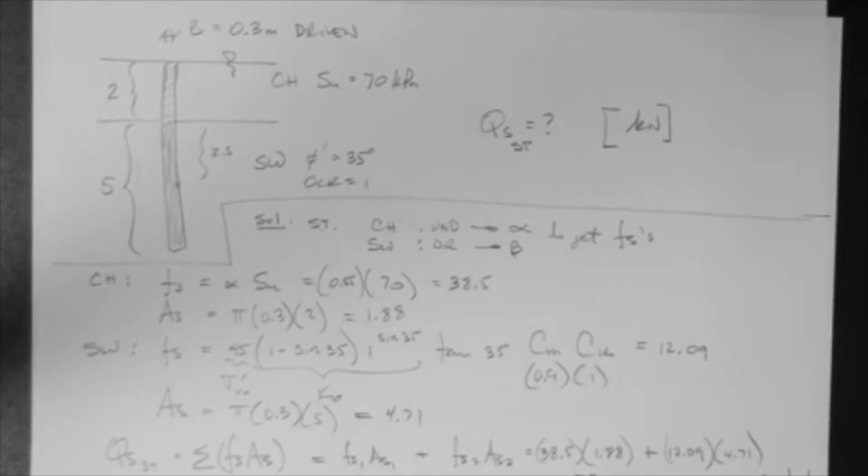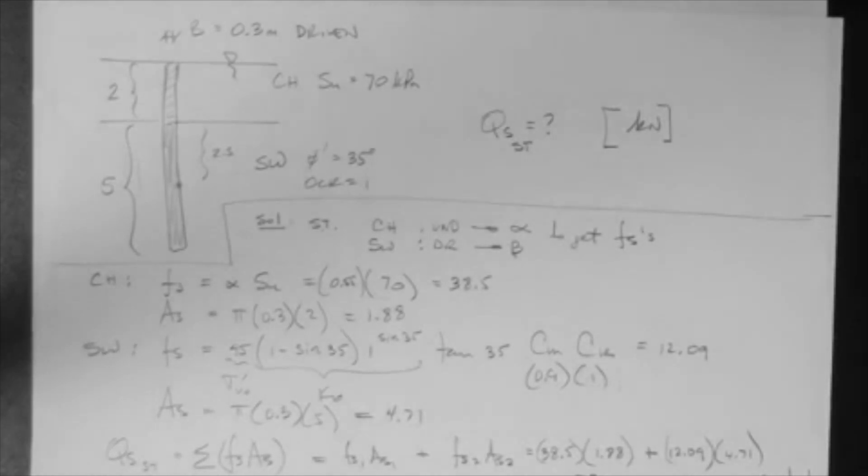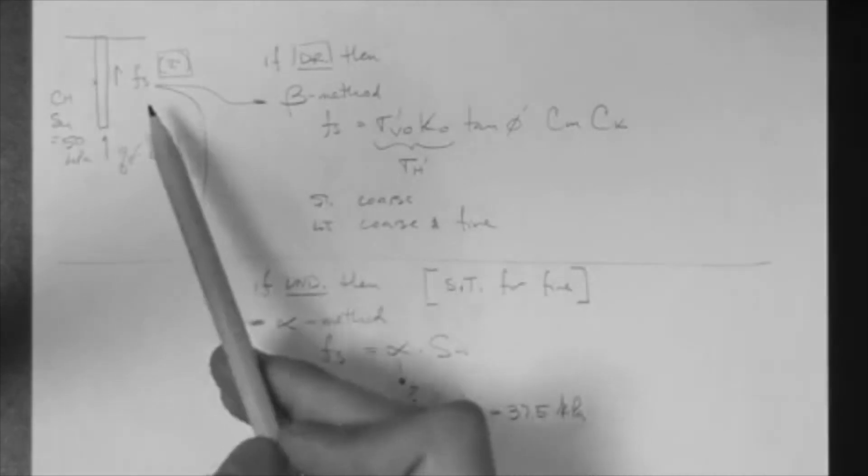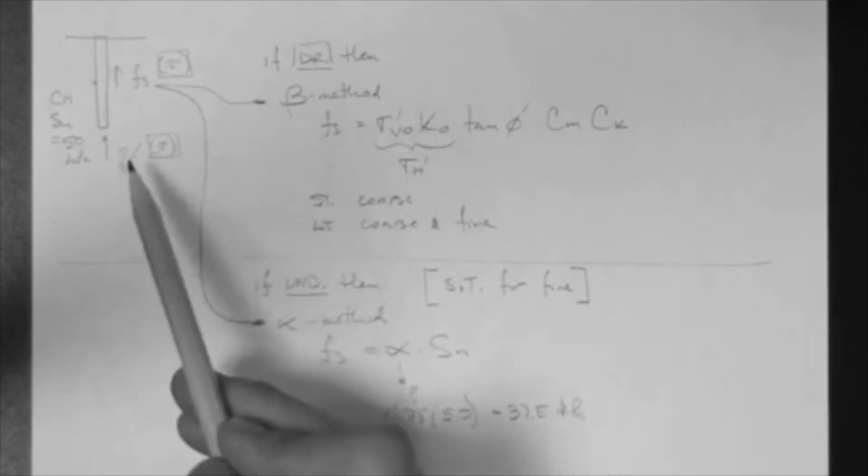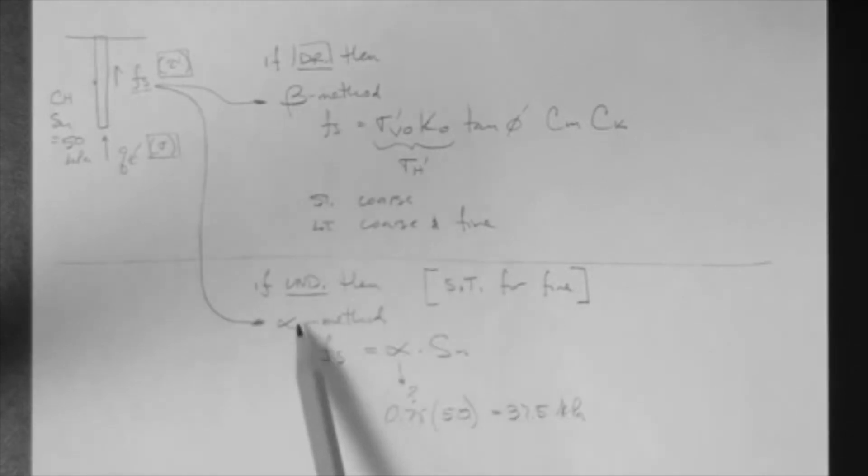That is the short-term capacity of this pile. Notice how we use the alpha method for the top layer and the beta method for the bottom layer. Because in the short-term, this layer is undrained, and this one is drained. If you go back to your first page here, or first part of the notes, you'll see that we said that the capacity, the full capacity is derived from the side friction resistance and the end-bearing capacity. So, to get Fs, we have to use either the beta or alpha method, right? To get Qe, we have to use different methods. So, what are we going to do?